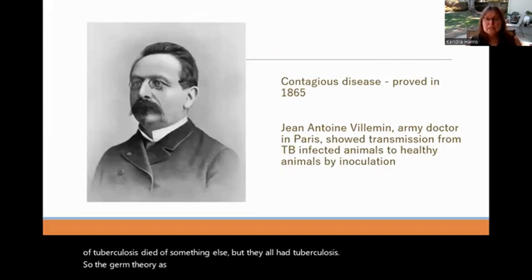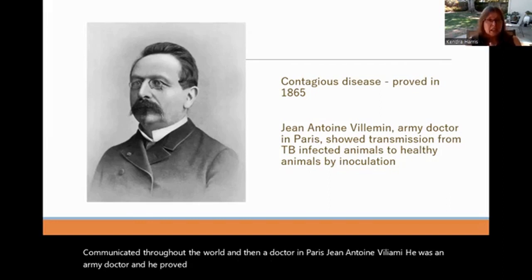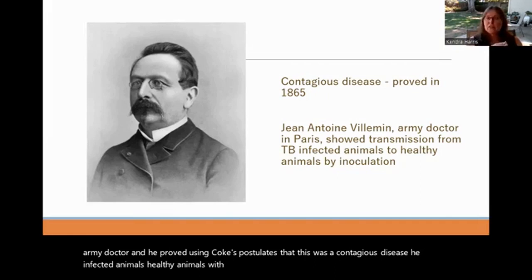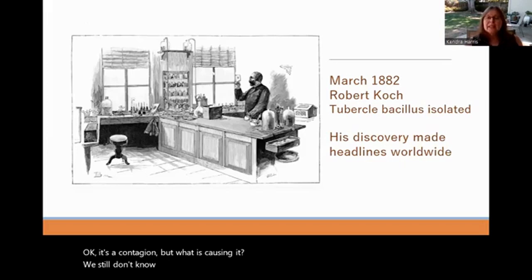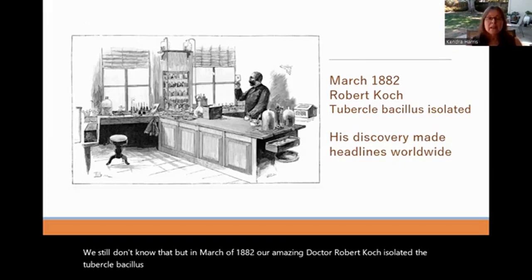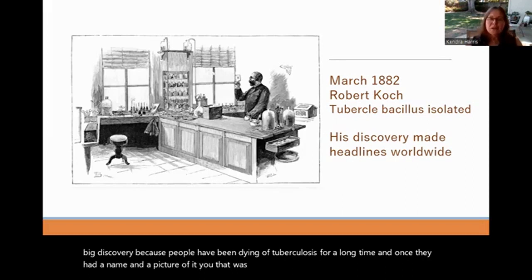As germ theory was being learned about and communicated throughout the world, a doctor in Paris named Jean Antoine Villemin — an army doctor — proved using Koch's postulates that this was a contagious disease. He infected healthy animals with tuberculosis from a dead animal's lung and showed it caused the disease. They knew it was a contagion, but still didn't know what was causing it. Then in March of 1882, Robert Koch isolated the tubercle bacillus, and his discovery made headlines worldwide.